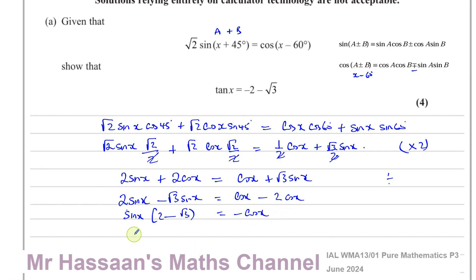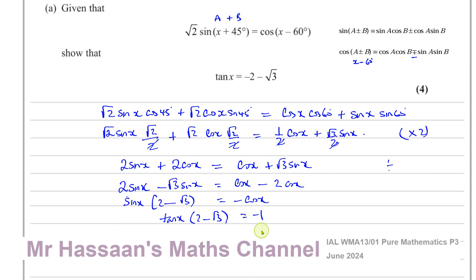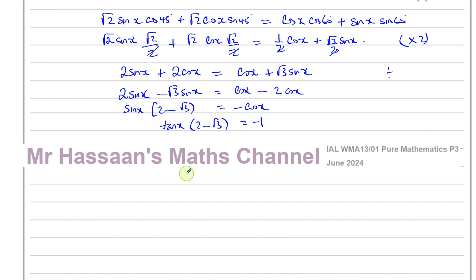Now I can divide both sides by cosine x. I'll end up with tan x times (2 minus root 3) equals minus 1. Then dividing both sides by (2 minus root 3) gives tan x equals minus 1 over (2 minus root 3).